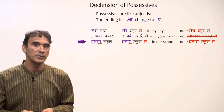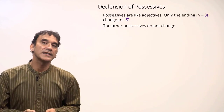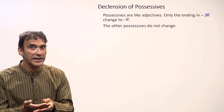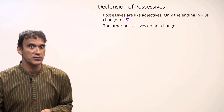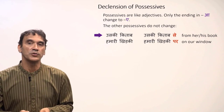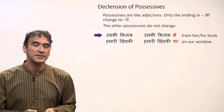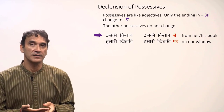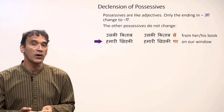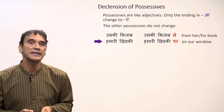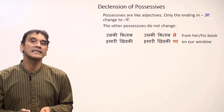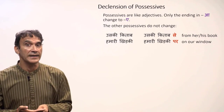Just like adjectives, other possessives that do not end in 'ā' do not change with postpositions. 'Uski kitab' (his/her book) stays the same: 'uski kitab se' (from his/her book). 'Hamari khidki' (our window) also does not change: 'hamari khidki par' (on our window). In both examples, the possessives do not end in 'ā,' so they do not change.